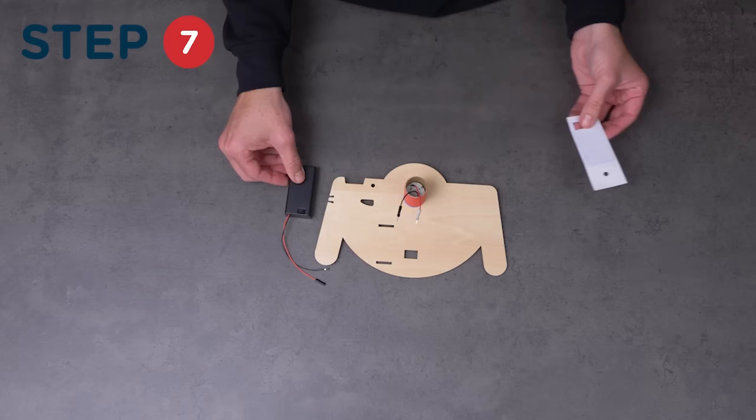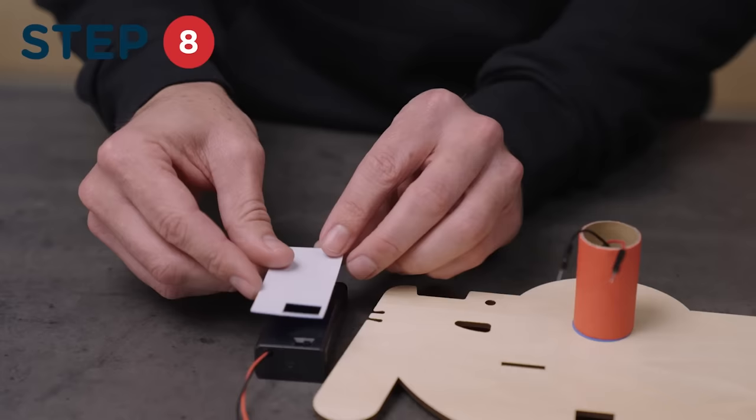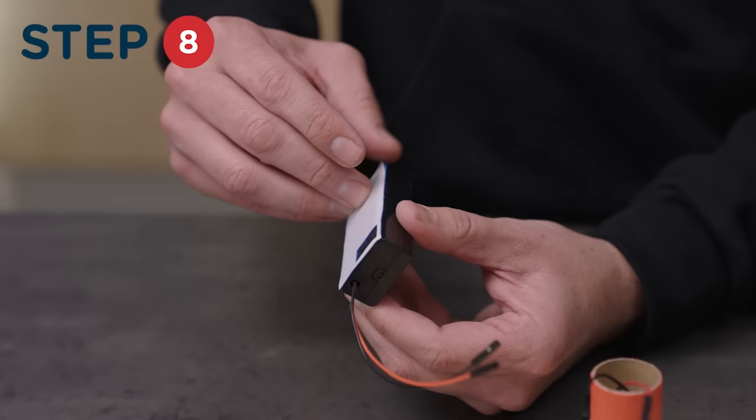Then, grab the rectangular adhesive foam and peel it off the paper backing. Then, stick it to the side of the battery pack that has the on and off switch and peel off the other paper backing.